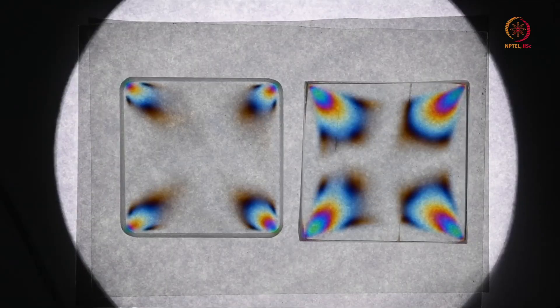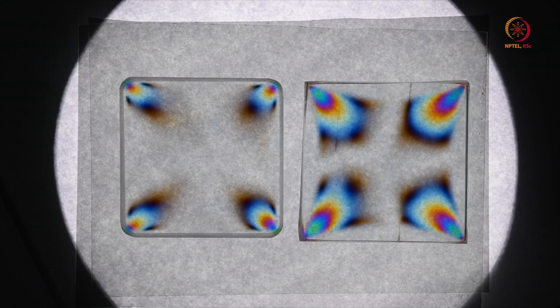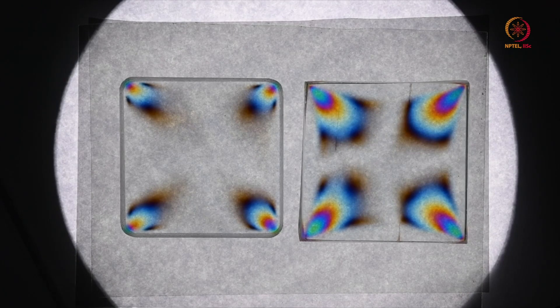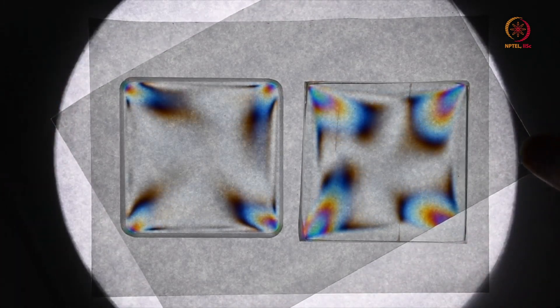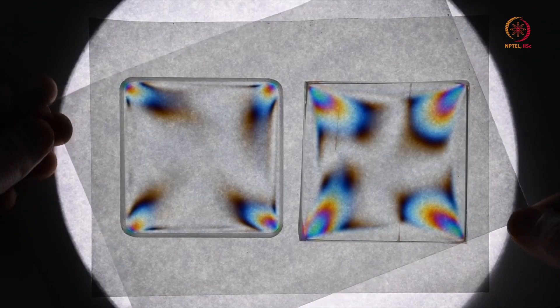Now let us look at what happens when we keep a chemically tempered glass in the same configuration. On the left we have chemically tempered glass while on the right we have thermally tempered glass. We can see that depending upon the stress state, we are getting two different types of fringe patterns. Now, the next sample that I am showing you is a very interesting and very famous sample.